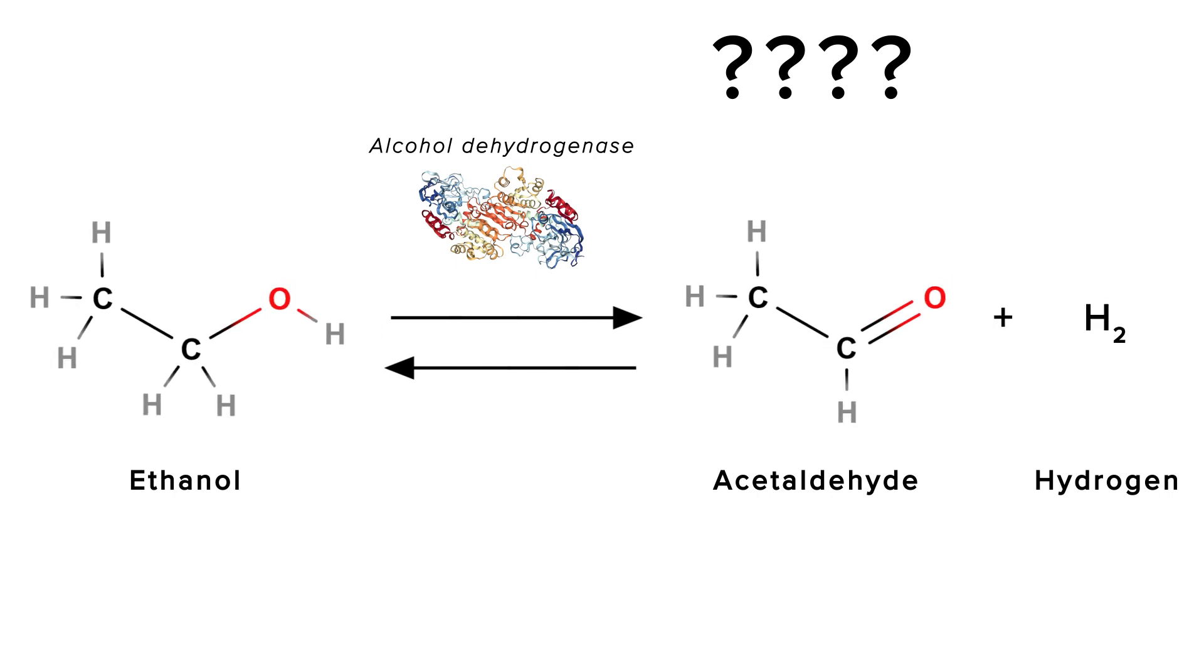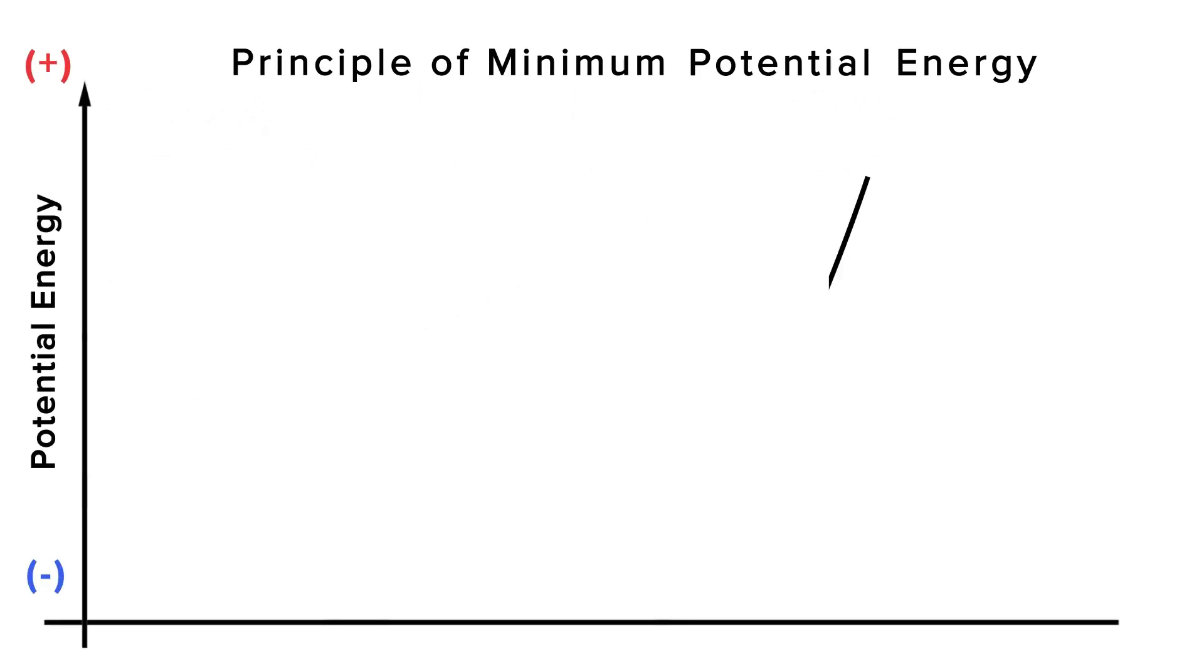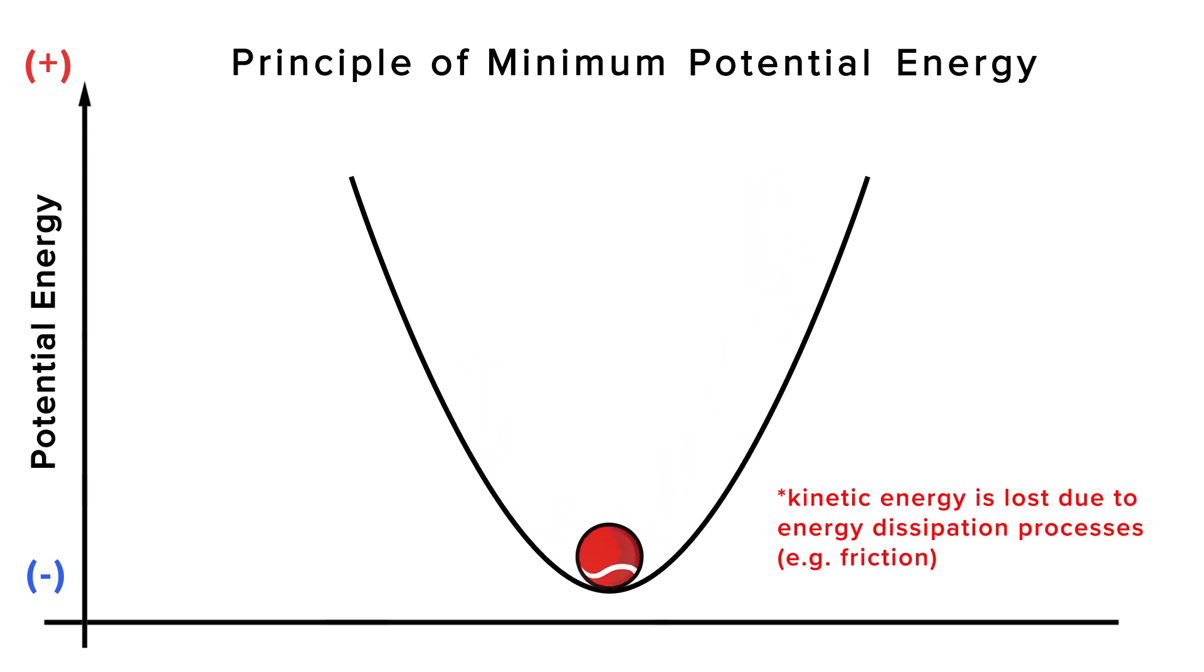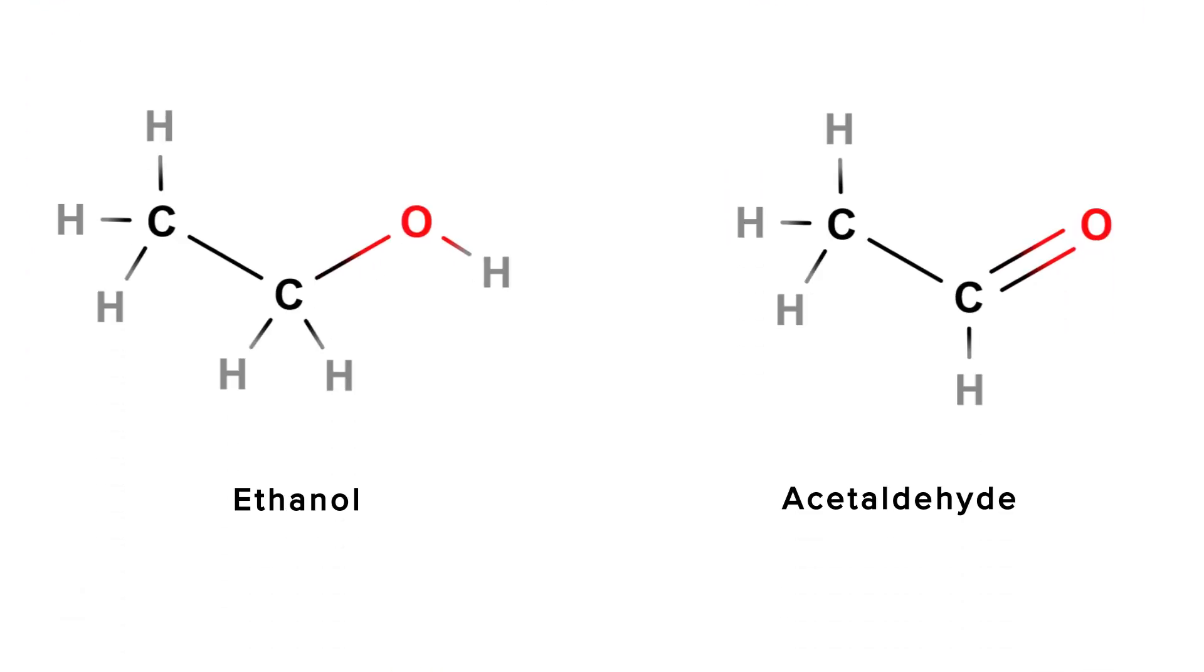For finding out the main direction of any reaction, we can use another principle called the principle of minimum energy, which basically says that all systems in the universe are always going to try and have the minimum potential energy possible. So which molecule here has less potential energy? This one or this one?